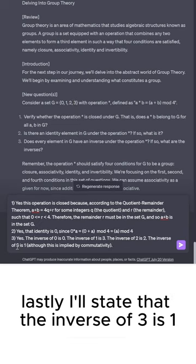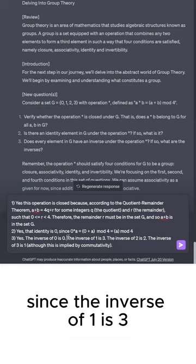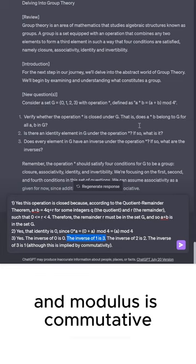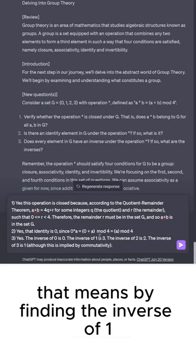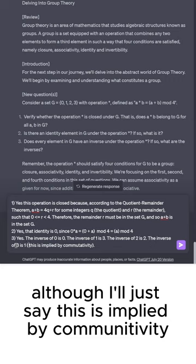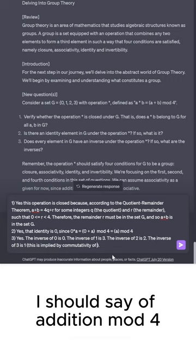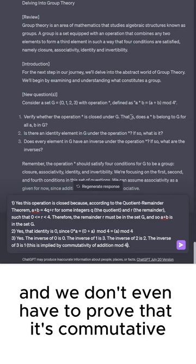Lastly, I'll state that the inverse of 3 is 1, although this is implied by commutativity. Since the inverse of 1 is 3 and addition mod 4 is commutative, a+b equals b+a, that means by finding the inverse of 1, we've also found the inverse of 3. I'll just say this is implied by commutativity of addition mod 4. Since the group G is not explicitly commutative, and we don't even have to prove that it's commutative.